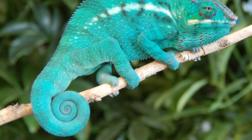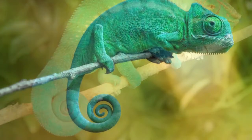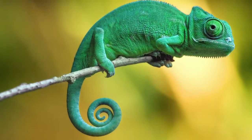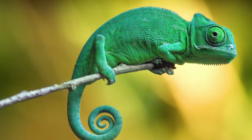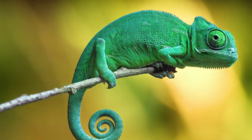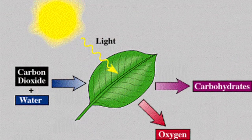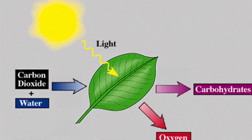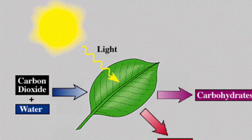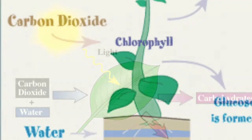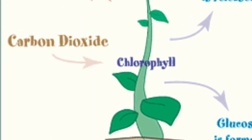Hi, today I'm going to tell you about the plant cycle, invertebrates, and reptiles. By the way, I'm Chameleon. The plant cycle is a process used by plants and other organisms to convert light energy, normally from the sun, and chemical energy that can be later released to fuel the plant's activities.